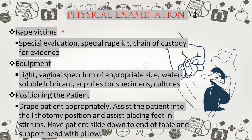For rape victims, a special evaluation with a rape kit and chain of custody for evidence is required. Equipment needed includes a light, vaginal speculum of appropriate size, water-soluble lubricants, and supplies for specimens and cultures. In positioning the client, drape the patient appropriately, assist into the lithotomy position, assist placing feet in stirrups, have the patient lie down to the end of the table, and support the head with a pillow.